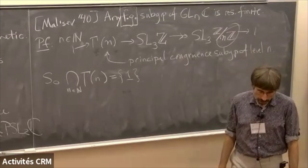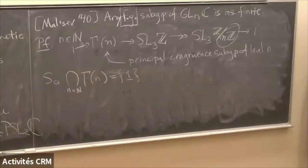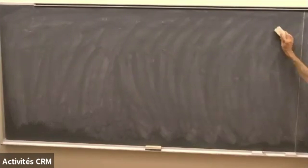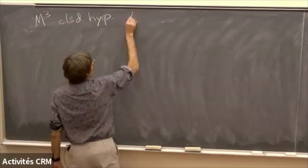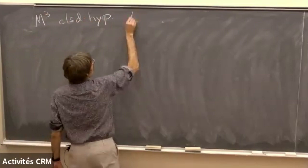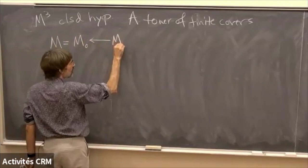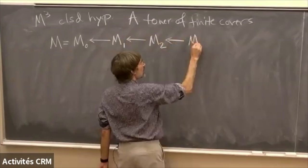What do I actually want to talk about today? I want to talk about finite covers of three-manifolds. Let M³ be a closed hyperbolic three-manifold. I'm going to look at a tower of finite covers. I start off with my initial manifold, and the corollary says I get a finite cover of that — maybe one of these congruence covers, maybe not. Then I take a finite cover of that, and I keep going.